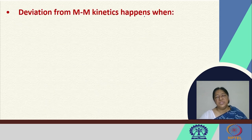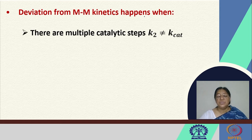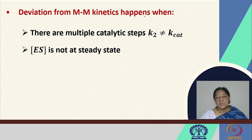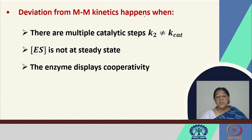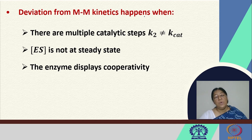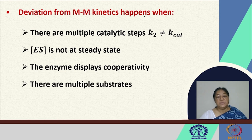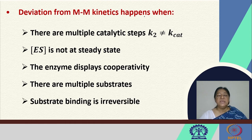Deviations from Michaelis-Menten kinetics occur when there are multiple catalytic steps where K2 cannot be equated to Kcat, when the ES complex is not strictly at steady state, when the enzyme displays cooperativity (as seen in protein-ligand binding where one substrate binding affects another), or when substrate binding is irreversible due to a covalent linkage.